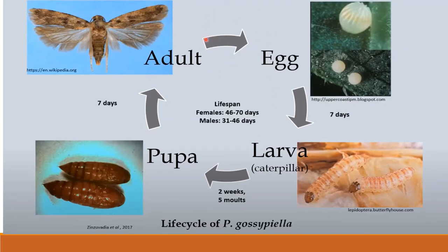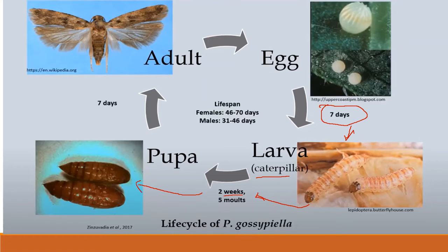As shown in the life cycle diagram, adults lay eggs on all parts of the plant. After an incubation period of 7 days, young larvae (caterpillars) come out, go through 5 molts over about 2 weeks. The mature larvae fall to the ground and pupate in a silken cocoon in the soil under fallen leaves, from which the adult moth emerges in 7 days.